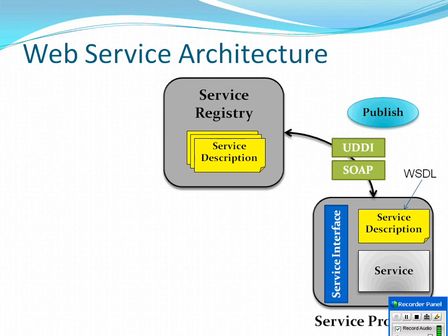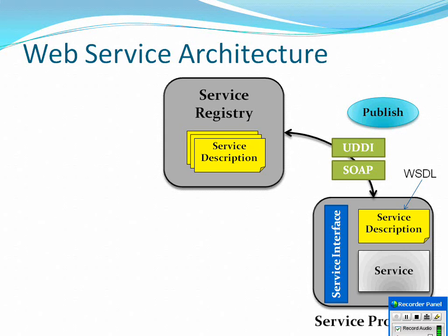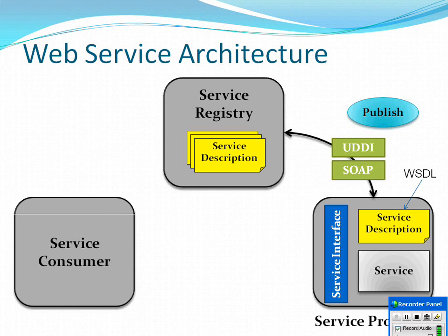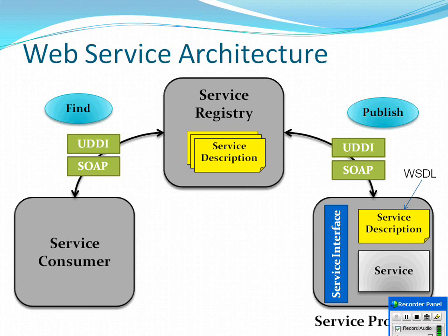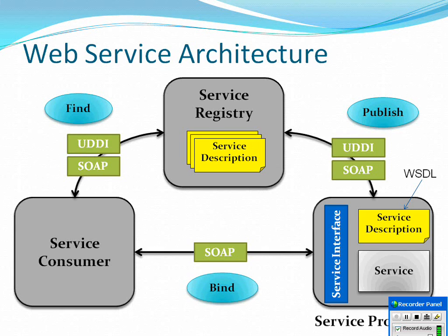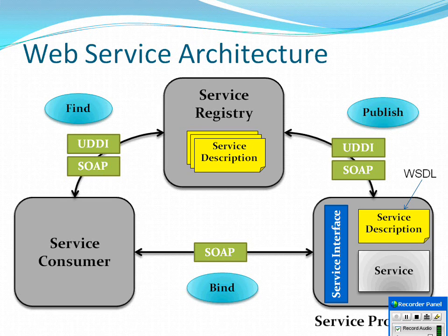Once you have the WSDL document available in the repository or registry, the consumer would find the service description. Once he finds the service description, he can then interact with the producer. So let us move ahead and discuss about how to develop web services.